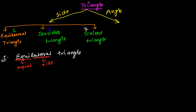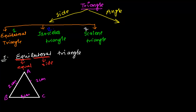Suppose I have a triangle ABC. Let me assume side AB has a length of 2 centimeters, side AC is also 2 centimeters, and side BC is also 2 centimeters. All the sides — AB, AC, and BC — have equal measurement of 2 centimeters. Such a triangle with all sides equal is known as an equilateral triangle.